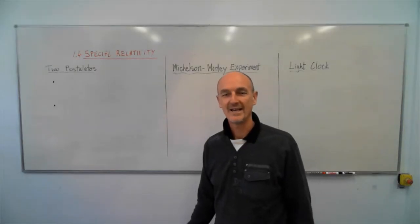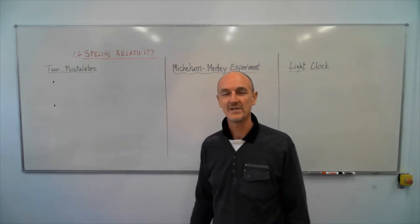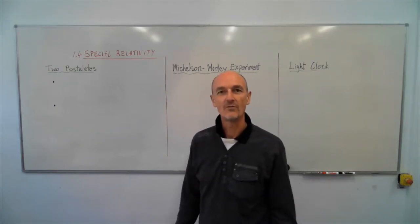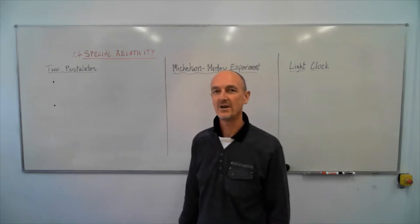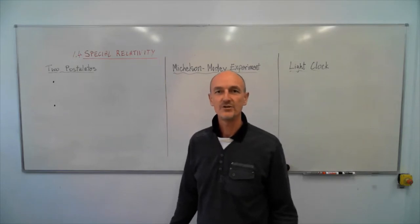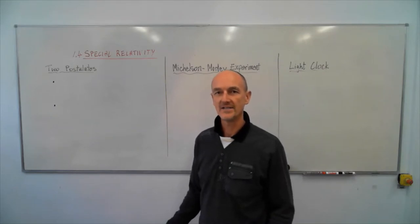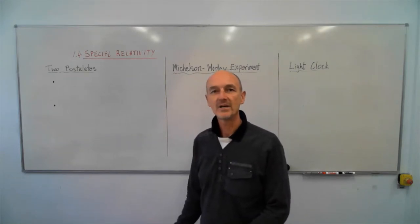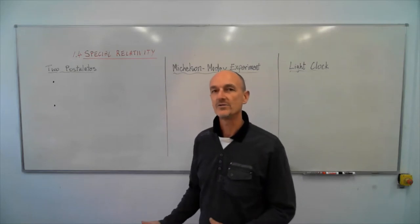Today we're going to be looking at special relativity, which is Einstein's examination of what happens when objects travel really fast. We would normally use Newton's laws to explain motion, but what Einstein and some scientists discovered at the end of the 19th century is that when things started to move really quickly, Newton's laws didn't work anymore.